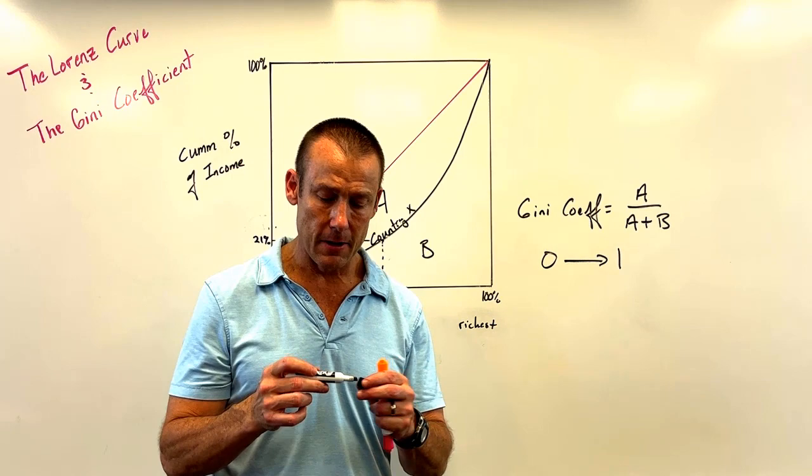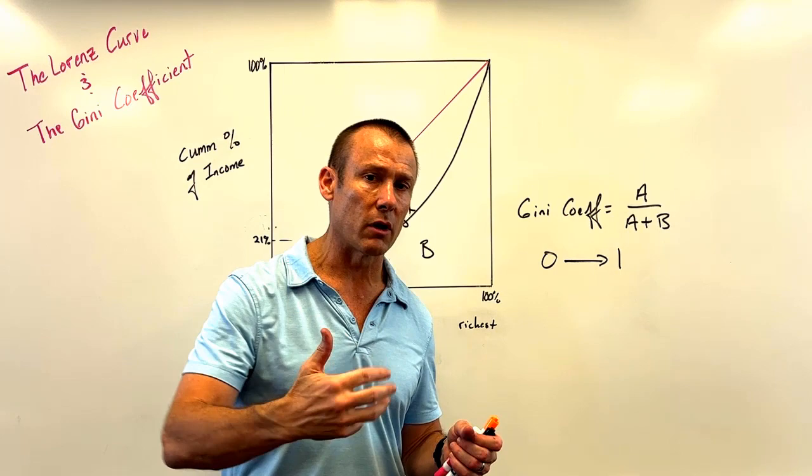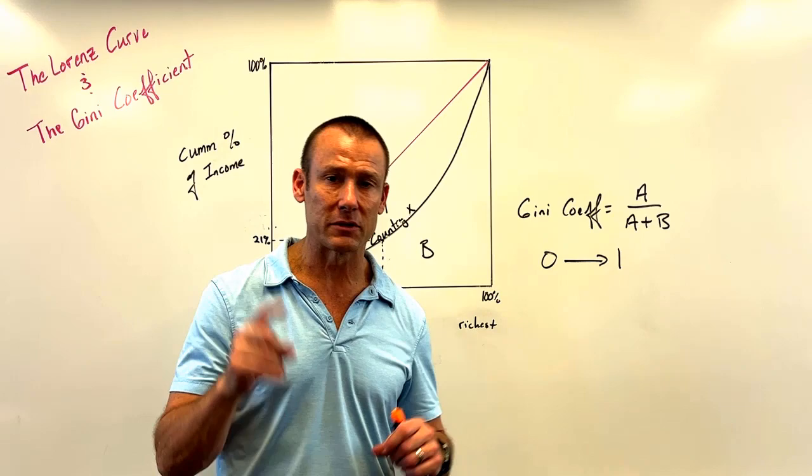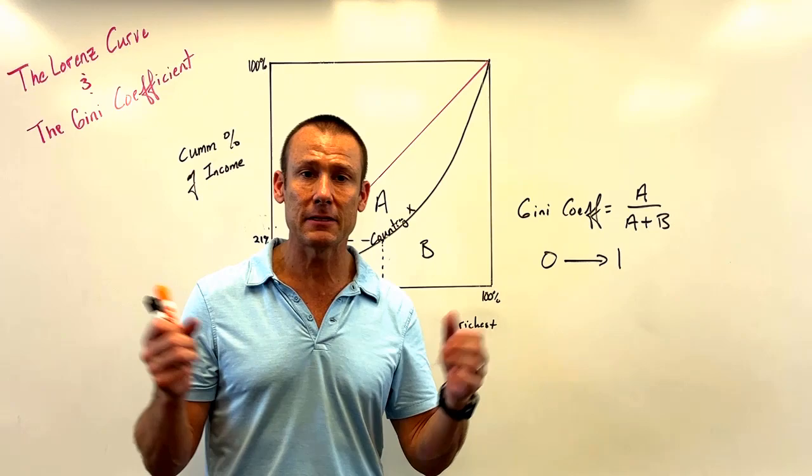Pretty simple concepts — really cool ways to represent income inequality. A single line gives you the Lorenz curve; a single number gives you the Gini coefficient. The Gini coefficient uses the Lorenz curve to calculate it. That's all there is to it.